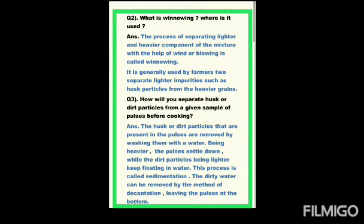Question number 3: How will you separate husk or dirt particles from a given sample of pulse before cooking? Before cooking pulse, we wash it to separate any husk particles, dirt, or soil. Answer: The husk or dirt particles present in the pulses are removed by washing them with water.